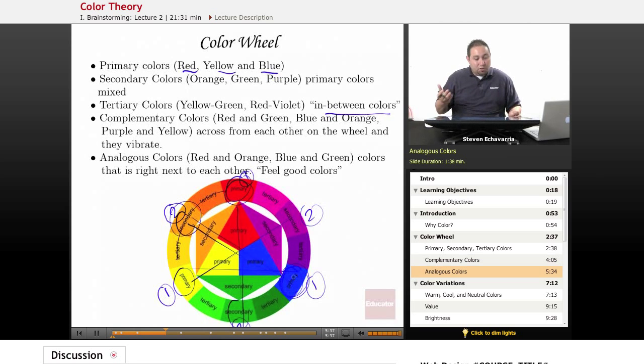And then you have your analogous colors, which red and orange, blue and green, they're basically right next to each other colors. So it's like these colors, these colors, the colors that are right next to them. They call them the feel-good colors because you can use different shades of them and it's not going to go wrong. It's actually going to blend.